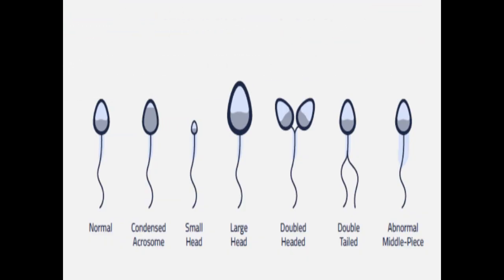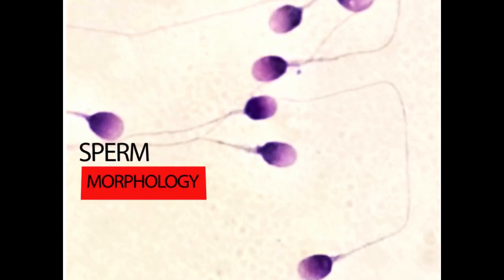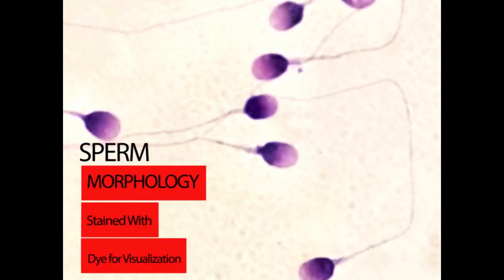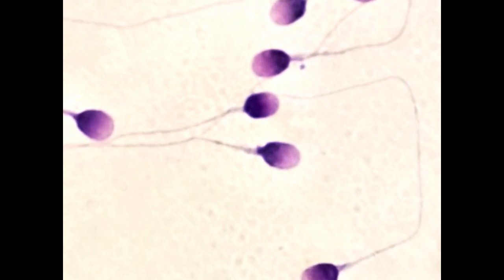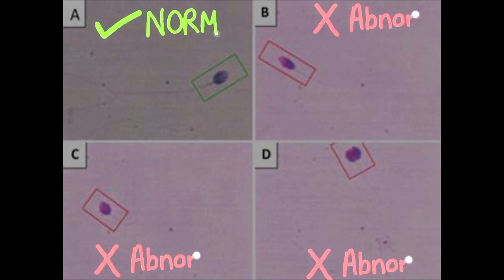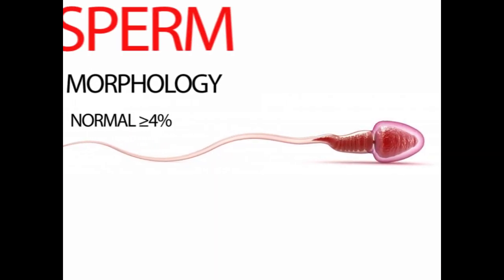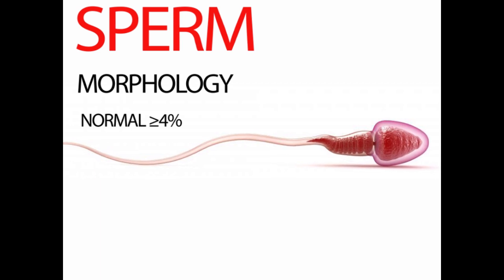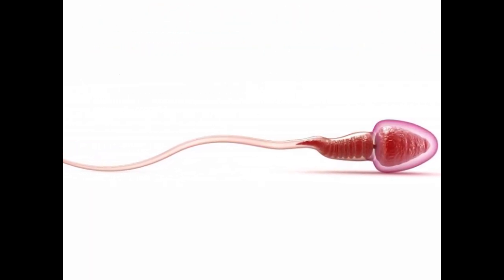Sperm morphology is another important parameter observed under the microscope. This analyzes the shape or structure of the sperm. To assess sperm morphology, sperms are stained with dye which allows for more robust visualization of structural features. As you can see here, the top left sperm is normal while others shown are abnormal. Normal morphology is given as a percentage of sperms analyzed, and 4% or greater sperms is considered normal based on WHO's semen analysis criteria.